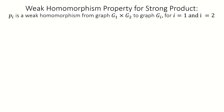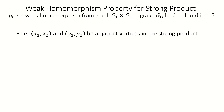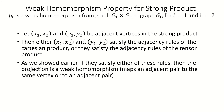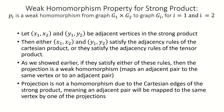For the strong product, a pair of vertices are adjacent if and only if they are adjacent in either the tensor or Cartesian products, and since the weak homomorphism property holds for those products, it has to hold for the strong product as well. However, like the Cartesian product and unlike the tensor product, the projection functions for a strong product are weak homomorphisms but not homomorphisms, as a pair of vertices that are adjacent under a Cartesian product edge in a strong product will be mapped to the same vertex in a factor graph under one of the projections.